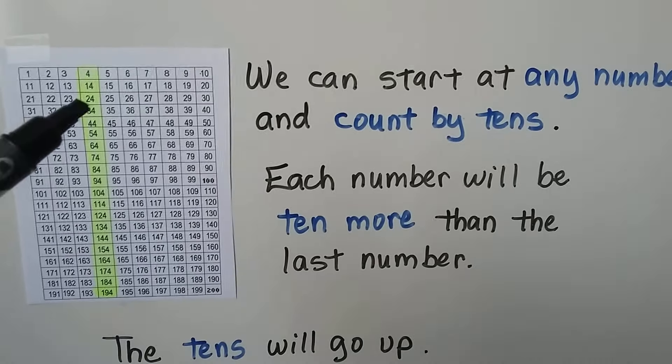Ten more would be 14 — we now have one ten. We had no tens, and now we have one ten. The next number would be 24; now we have two tens. The ones place is staying a four. Then we have three tens, then four tens, and the ones place stays the same. That would be counting by tens starting with four.